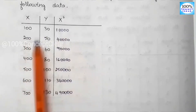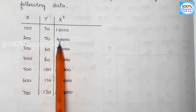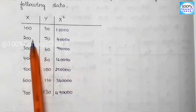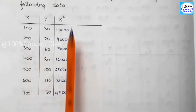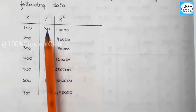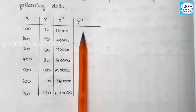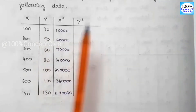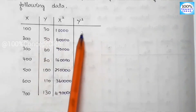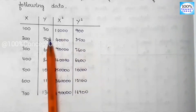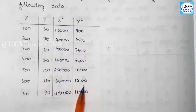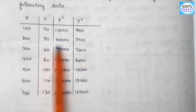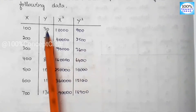100 squared is equal to 10,000 and 200 squared is equal to 40,000 and 300 squared is equal to 90,000. That means the x² values are all the squares we wrote. Now let's move into the y squared values. 30 × 30 is equal to 900 and 50 × 50 is equal to 2,500. We have squared them.